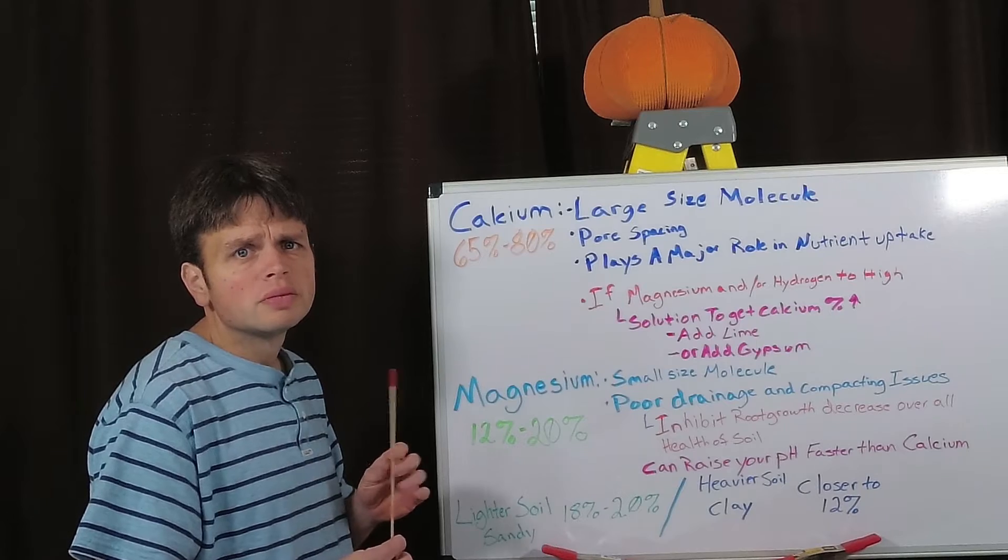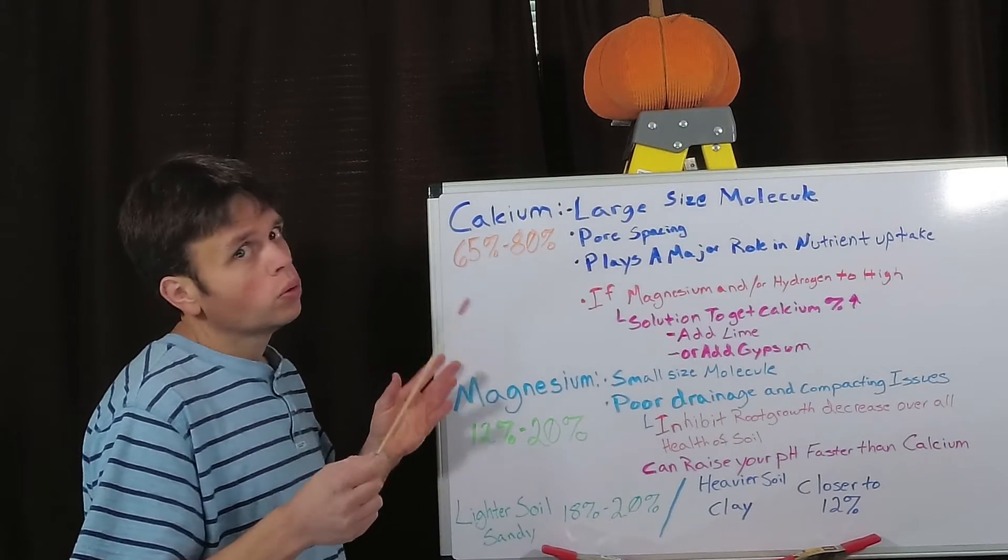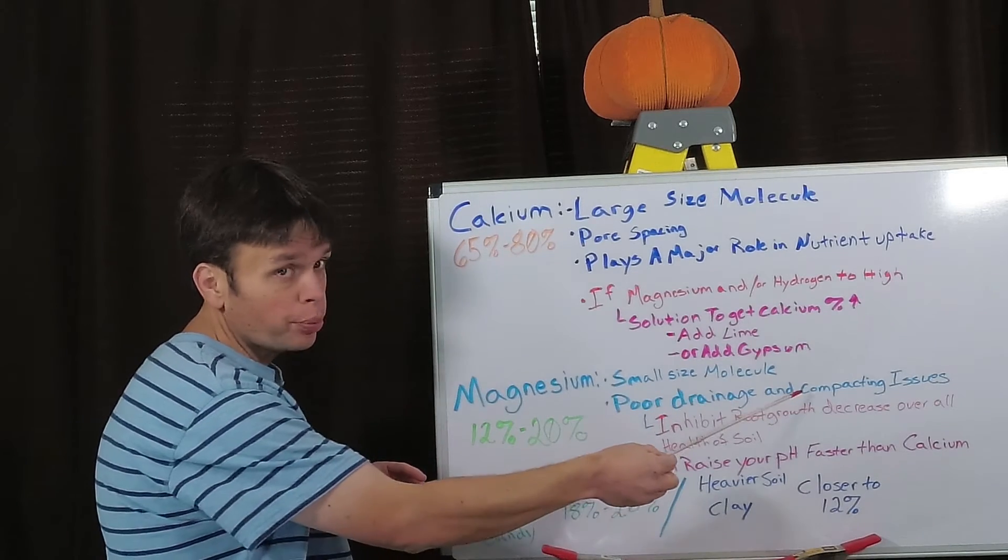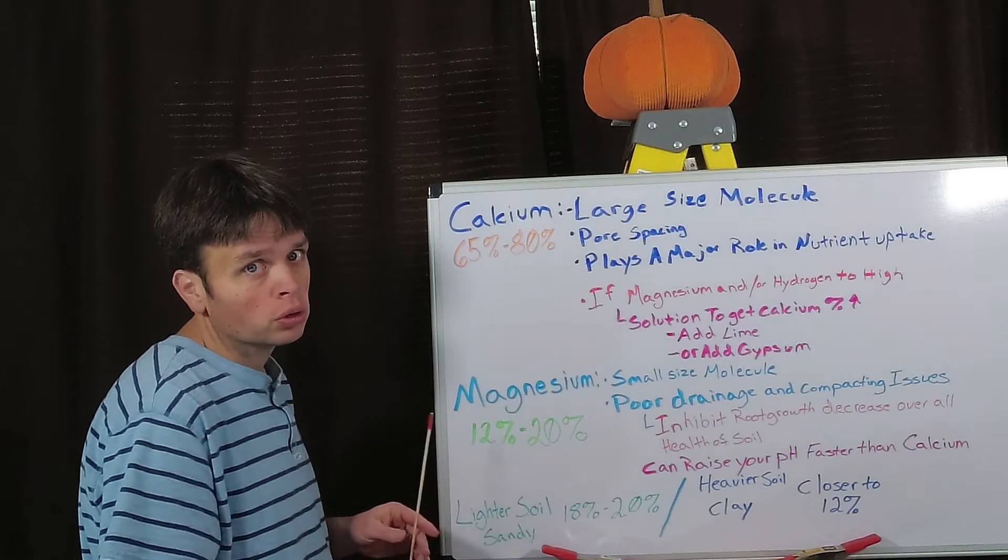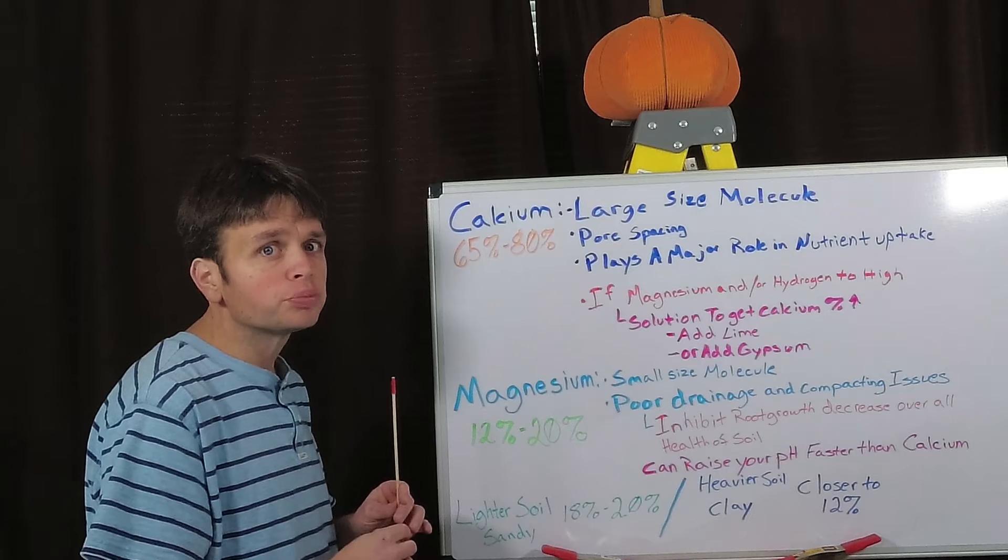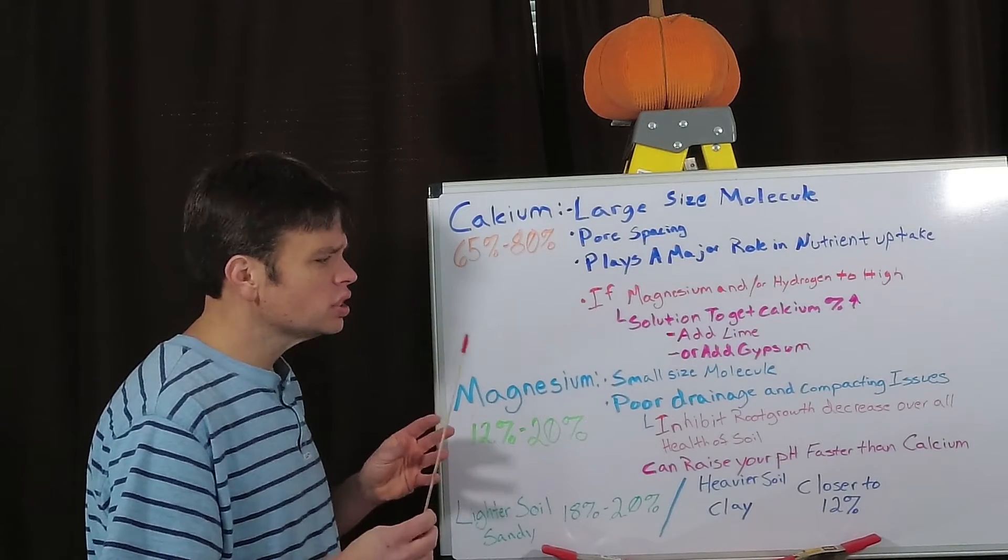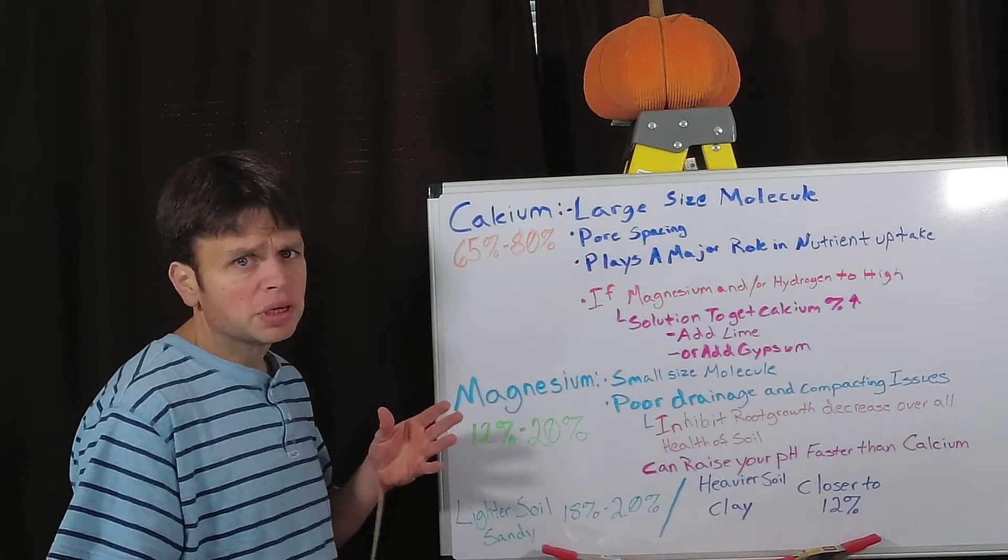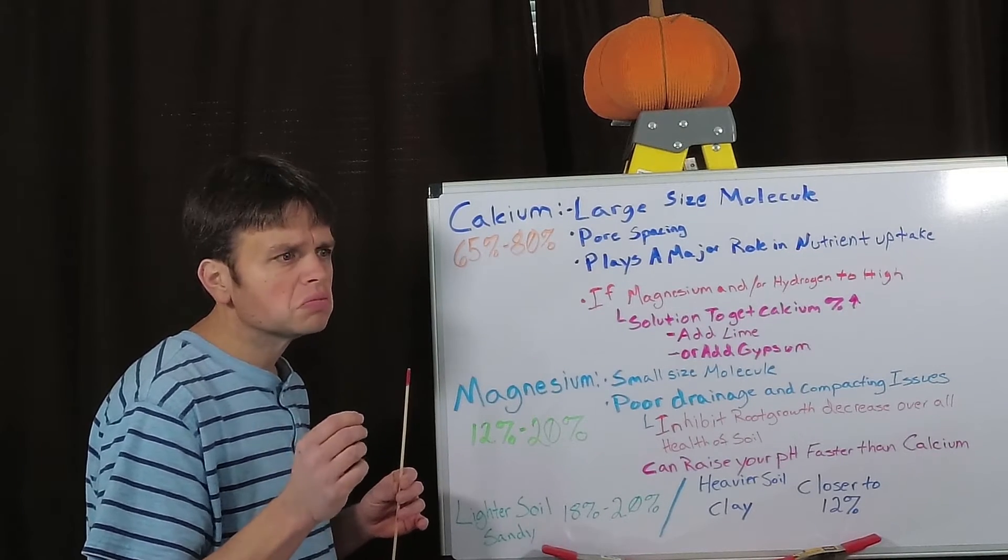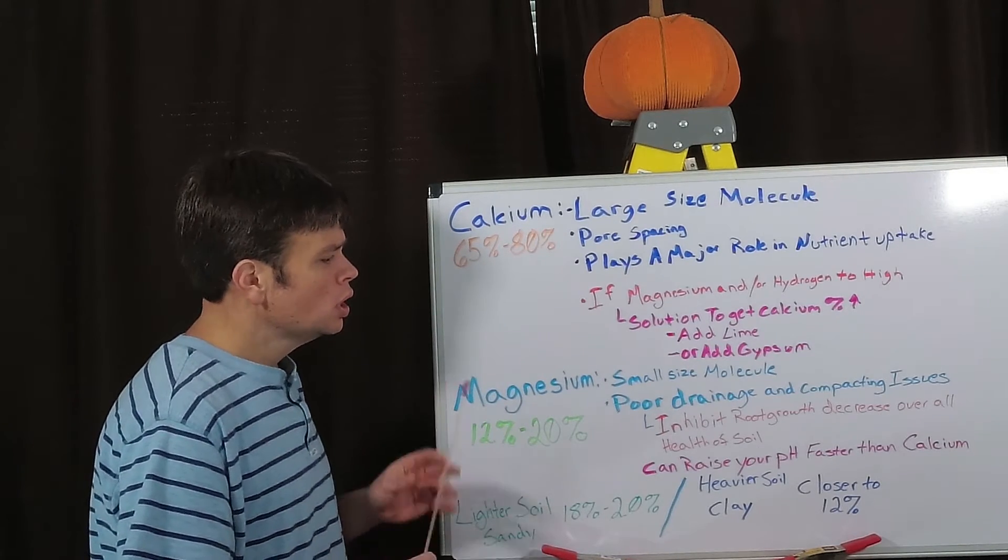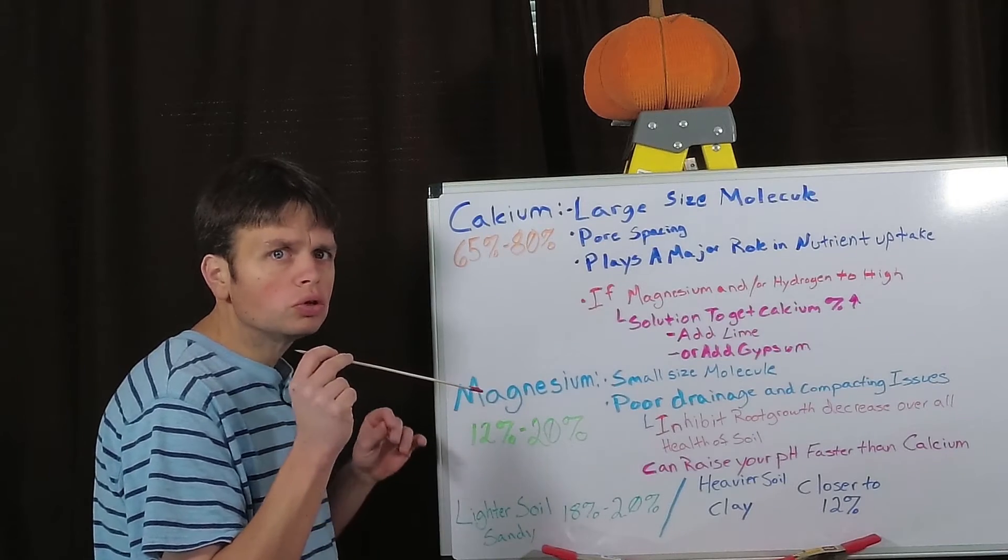Now why is that important? Why do you want to focus on getting your magnesium levels down? Well let me tell you, if poor drainage and compacting wasn't enough to convince you to bring that number down, it also inhibits root growth, which is pretty important. And it also basically just decreases the overall health of your soil, mainly because you have the poor drainage, you will get more soil-borne diseases. So if your magnesium percentage is way too high, you need to take measures to bring it down.